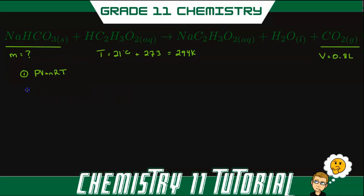So all we need to do is rearrange this equation for moles. So n will then be equal to PV over RT. Let's substitute all we know. So 100 kilopascals for pressure, 0.8 liters for volume. Our gas constant is 8.31 kilopascals liter per mole Kelvin, all times by our temperature which is 294 Kelvin. When we do that, we get 0.0327 moles of carbon dioxide.